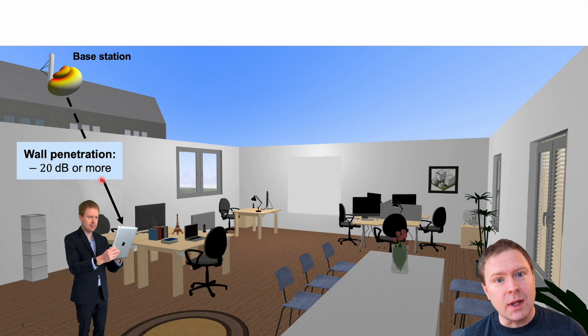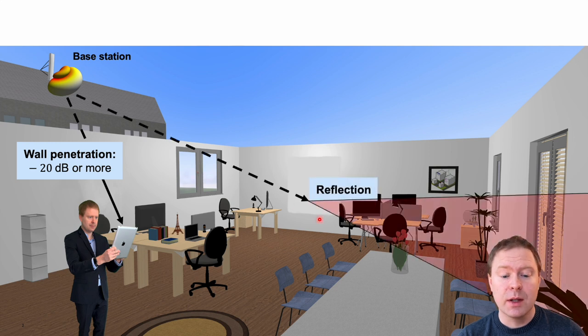The good thing is that in general the signals can reach you from different paths, so the signal might go through this window. The problem is that it will then hit the wall and then it gets reflected into the far right end of the room. So this is not really helping you to get good service.